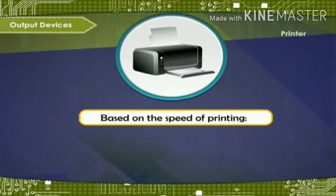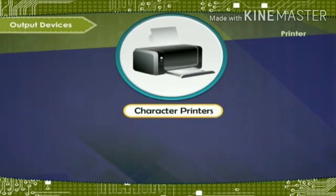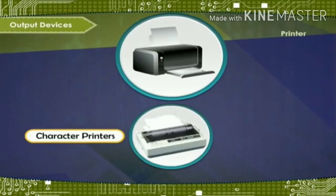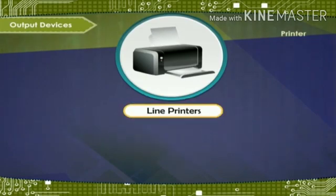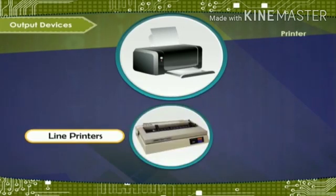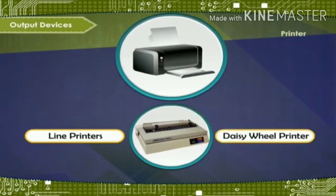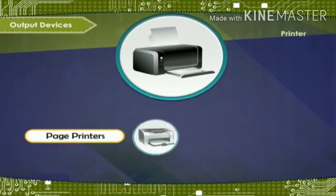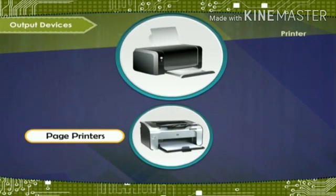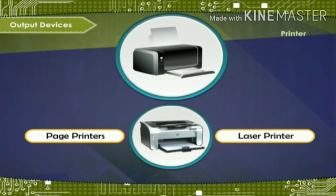Based on the speed of printing: Character printers print a single character at a time — example, dot matrix printer. Line printers print one line at a time — example, daisy wheel printer. Page printers print one page at a time; these are the fastest printers — example, laser printer.